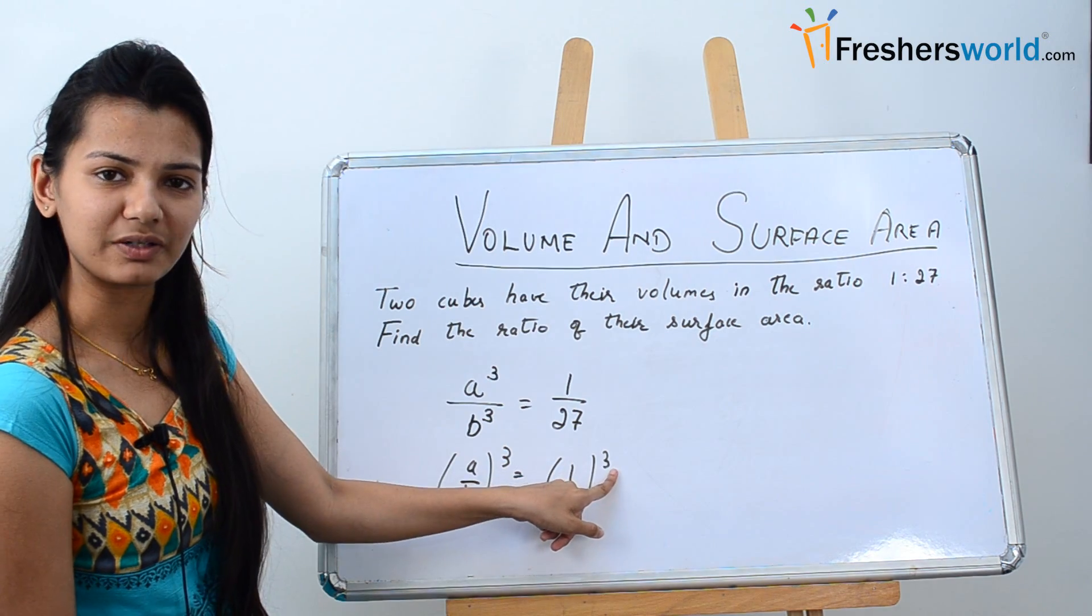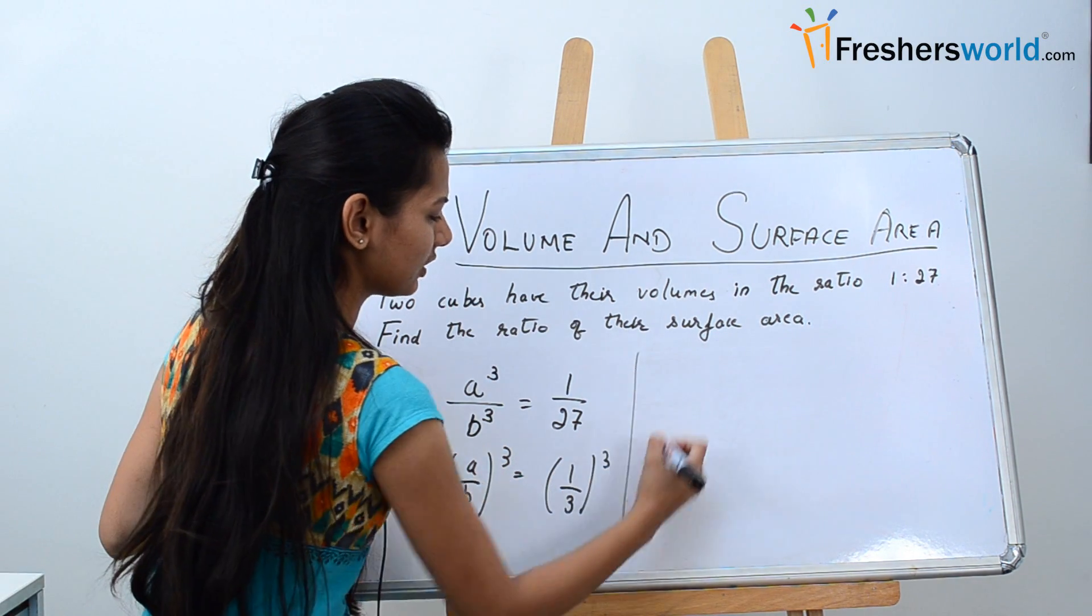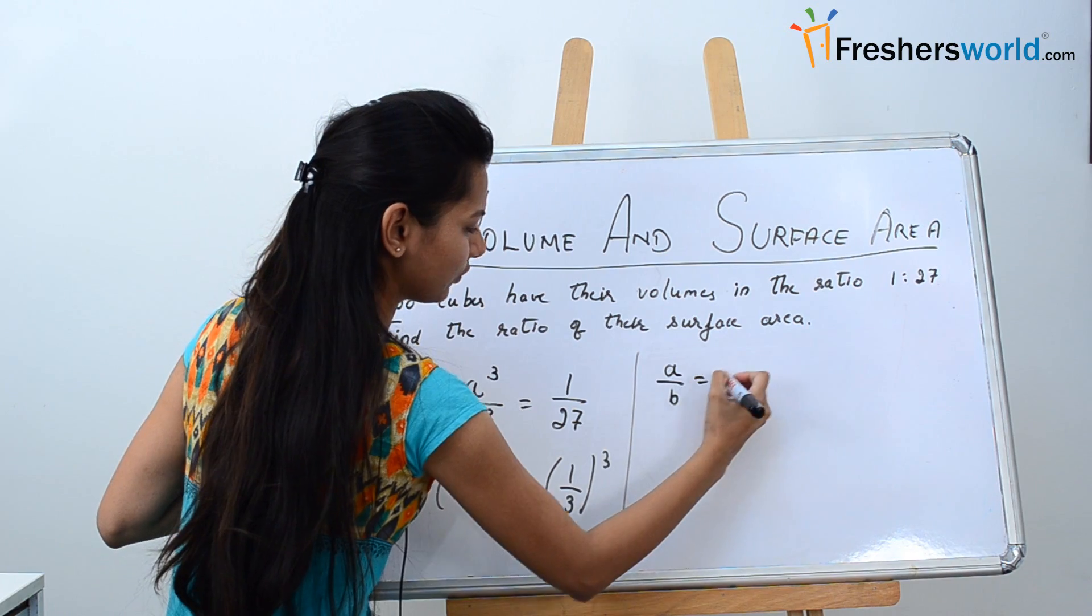Now since the powers are same, we can equate the bases. That means the ratio a by b is equal to 1 by 3.